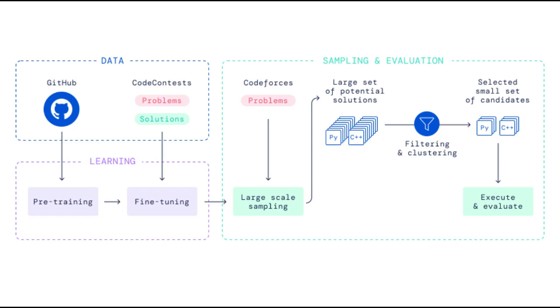They pre-trained their model on selected public GitHub code and fine-tuned it on their relatively small competitive programming dataset. At evaluation time, they create a massive amount of C++ and Python programs for each problem, orders of magnitude larger than previous work. They then filter, cluster, and re-rank those solutions to a small set of 10 candidate programs that they submit for external assessment.